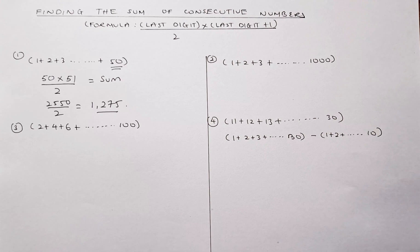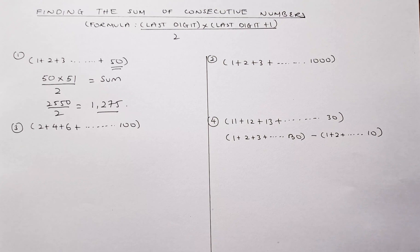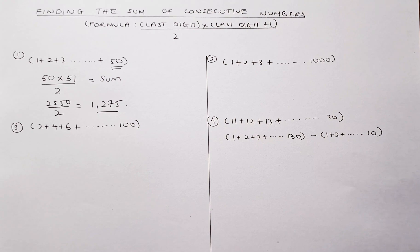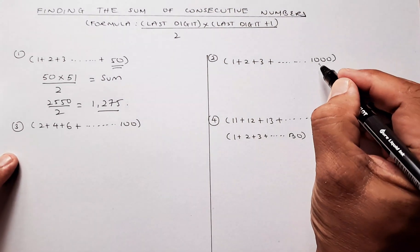So now we do a more challenging question. You have 1 to 1,000. This question has appeared in some of the admission tests for universities and so forth. So this is how we do it. You look at the last number here, 1,000.